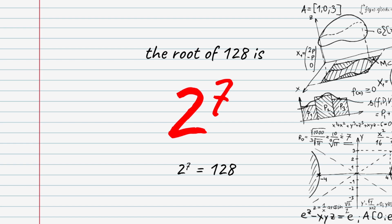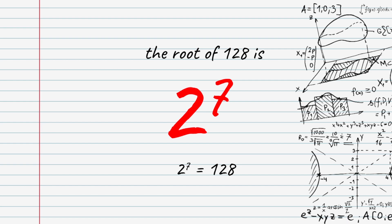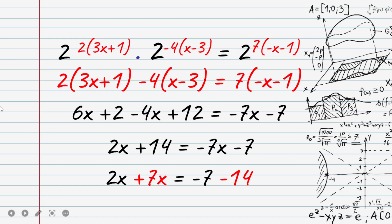When it comes to the power of 3x plus 1, times 1 over 16 to the power of x minus 3, equals 128 to the power of minus x minus 1. We convert: 1 over 16 to the power of x minus 3 becomes 4 to the power of minus 4 times x minus 3, which simplifies, and 128 to the power of minus x minus 1 gives us the power of x minus 7.